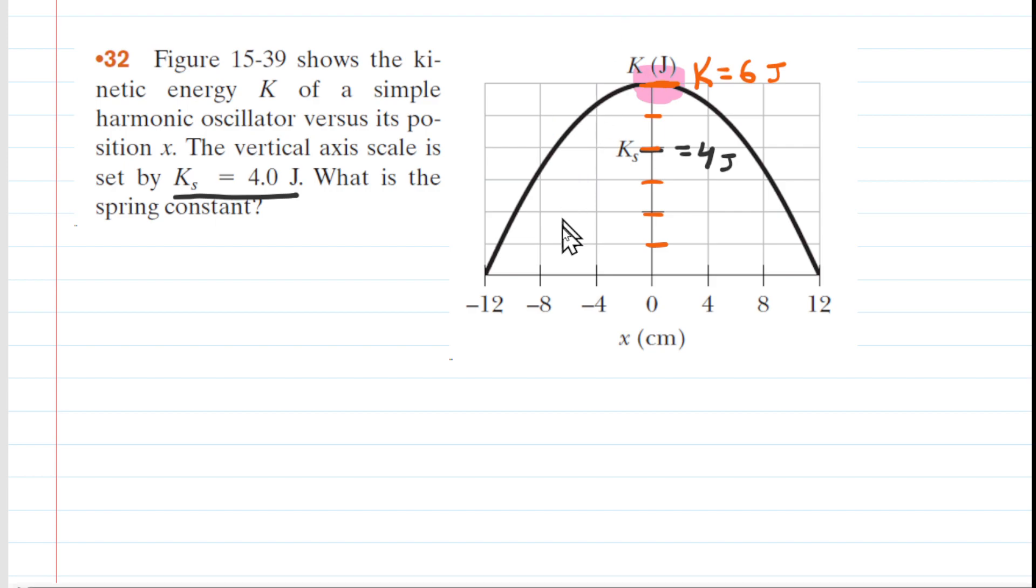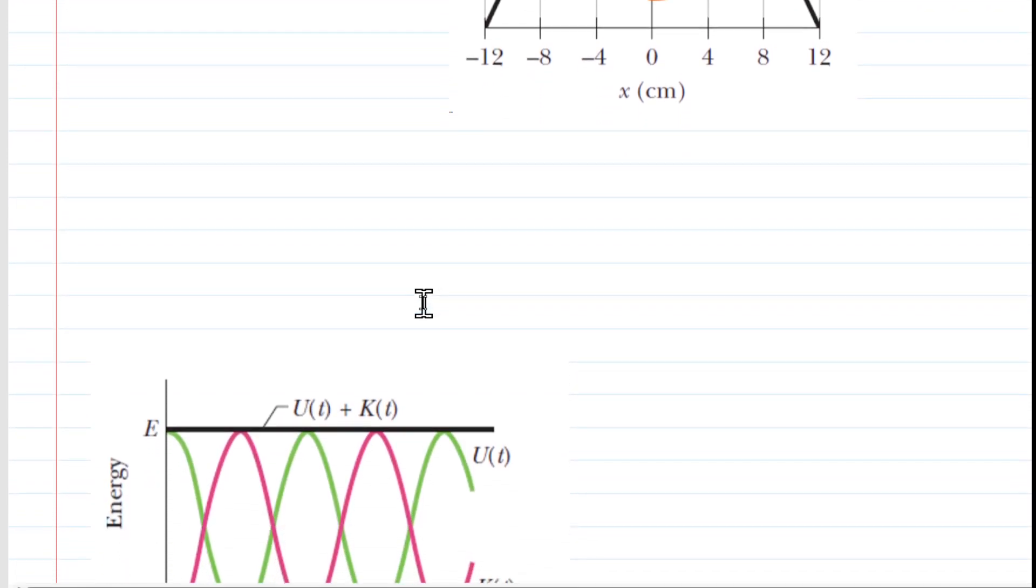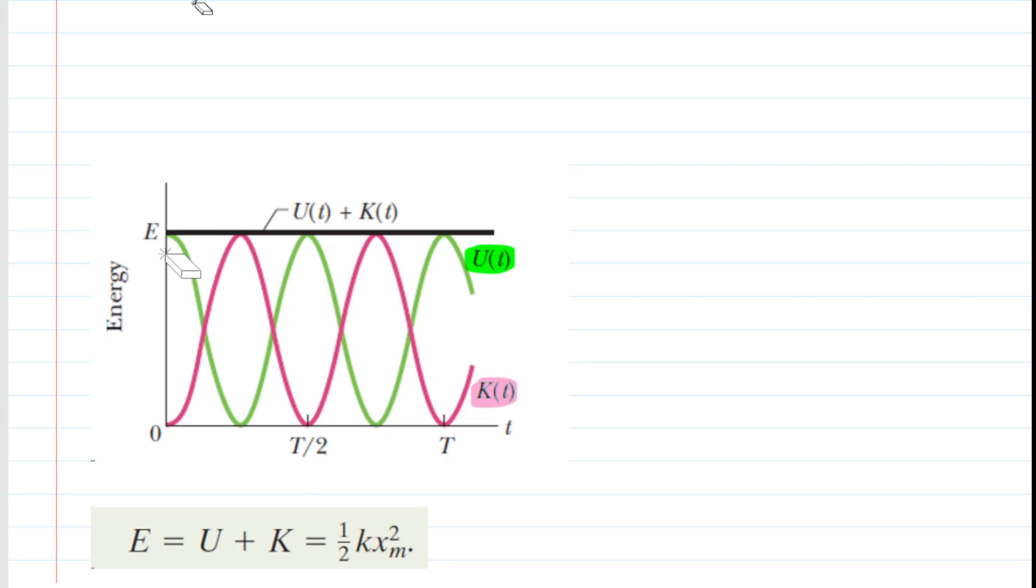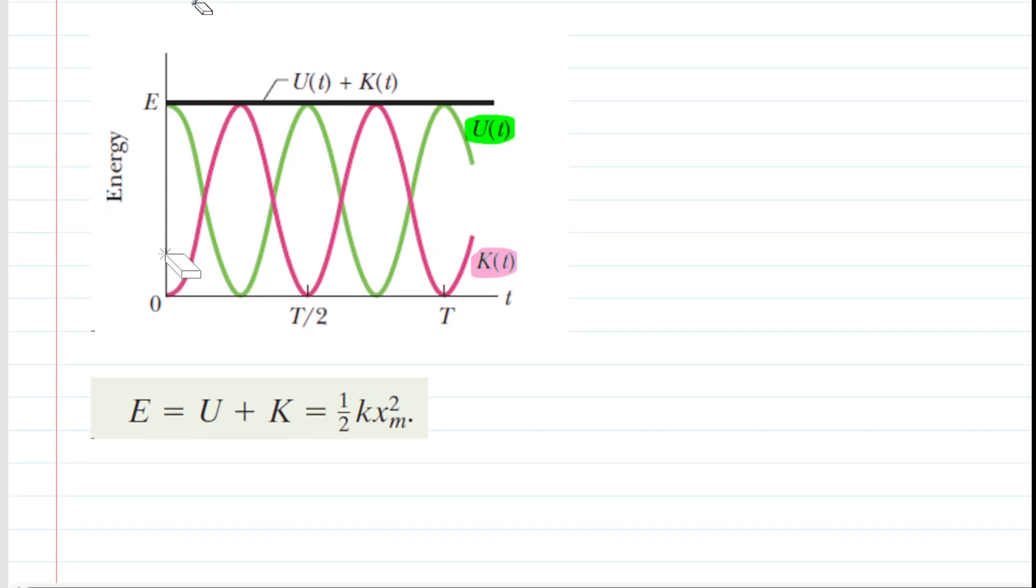As this particle goes back and forth during its oscillation, there's an interconversion of energy. The energy will interconvert between the kinetic energy as well as the elastic potential energy stored in the spring. But importantly, as the energies interconvert, the total energy remains constant. So that black line is a constant horizontal line. It is the complete or total mechanical energy of the oscillator as it travels back and forth.